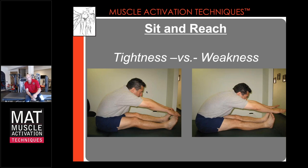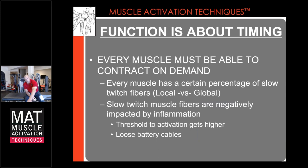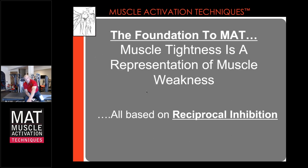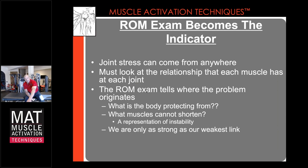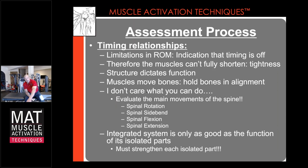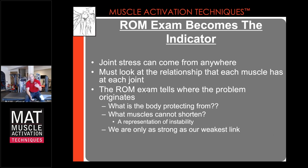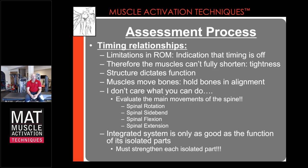Every muscle has a percentage of slow twitch fibers — those are negatively impacted by inflammation and are what we need to focus on. Range of motion becomes the indicator. For spinal mechanics, if we look at four main movements of the spine: Bryson DeChambeau went through the MAT process; we strengthened his abdominal muscles through every one of these motions to where he became the longest driver on tour. As his strength increased, his flexibility dramatically increased — because the first goal was to tighten the battery cables, improve neurological control, which started to open up motion.